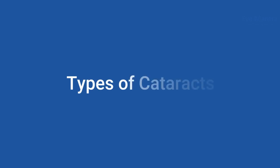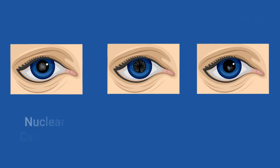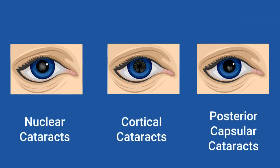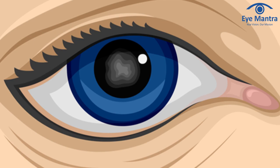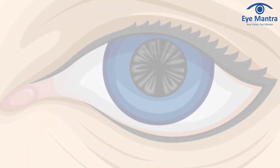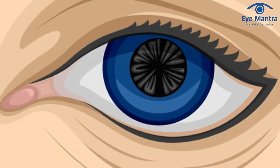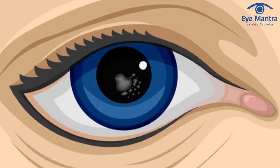Now we'll talk about types of cataract. Cataracts fall into three different categories: nuclear, cortical, and posterior subcapsular cataract. Nuclear cataract forms in the center or the nucleus of the lens, while cortical cataract forms around the outer edge or the cortex of the lens. Posterior subcapsular cataract forms at the back of the lens, closest to the retina.